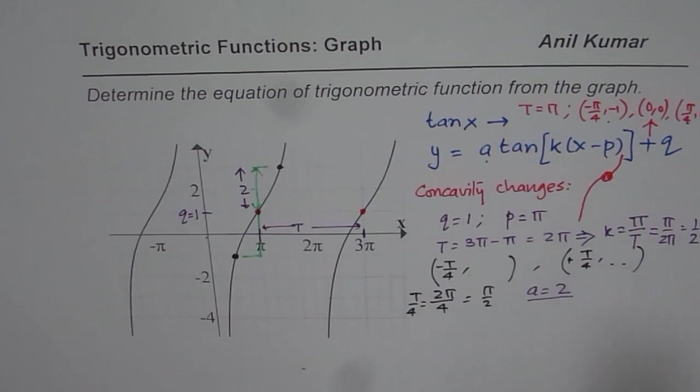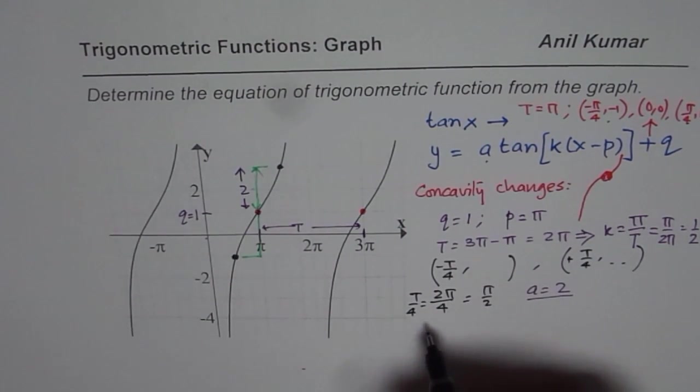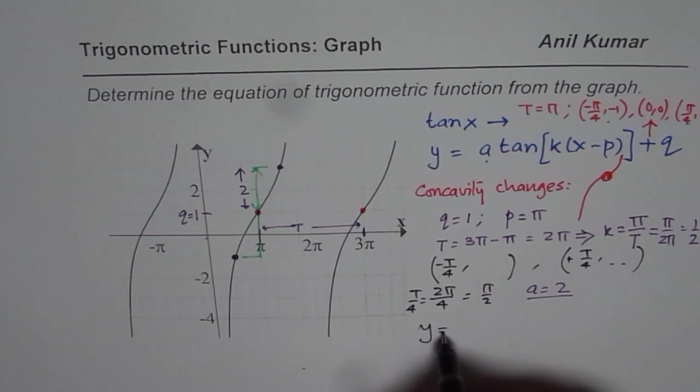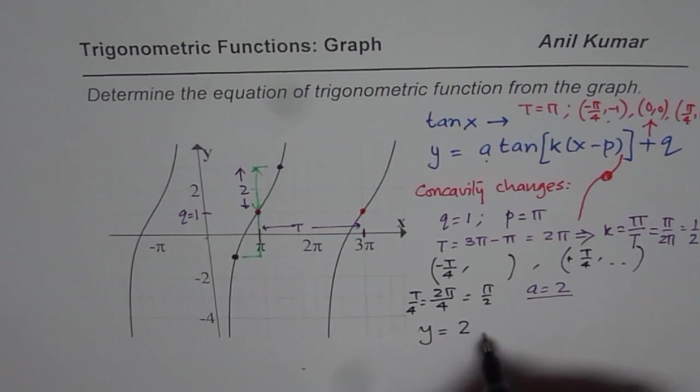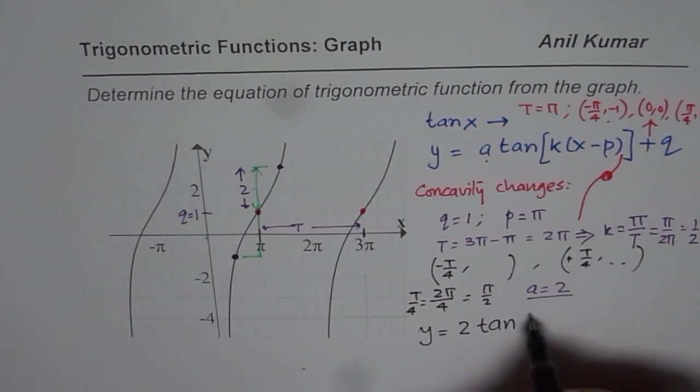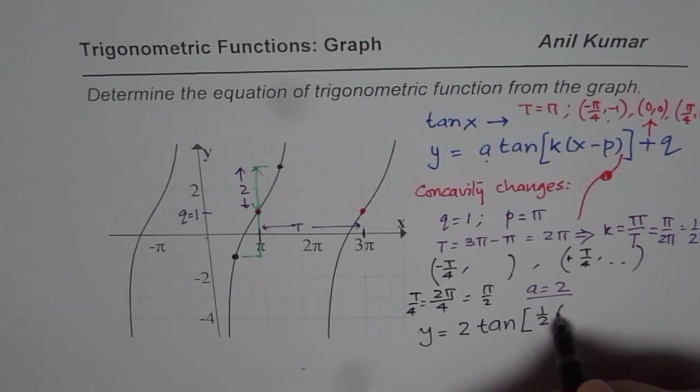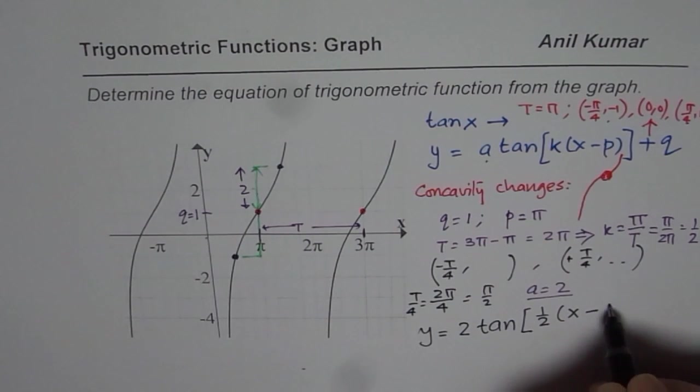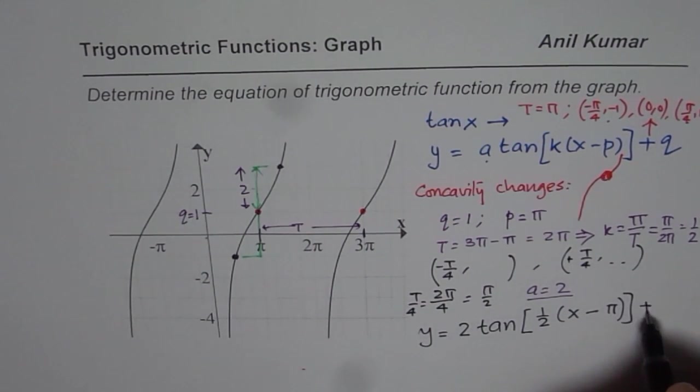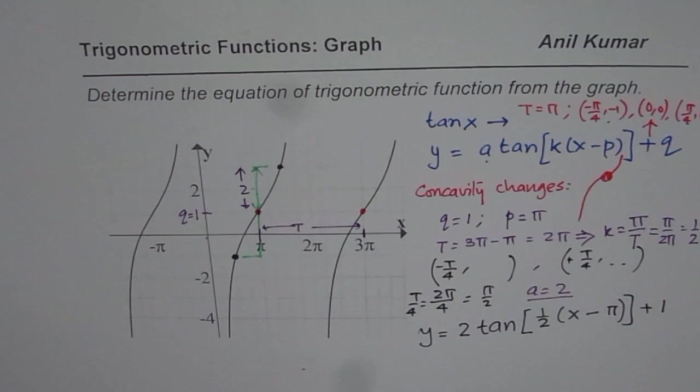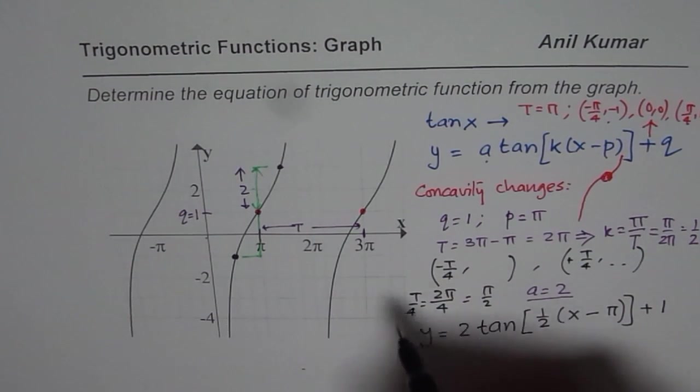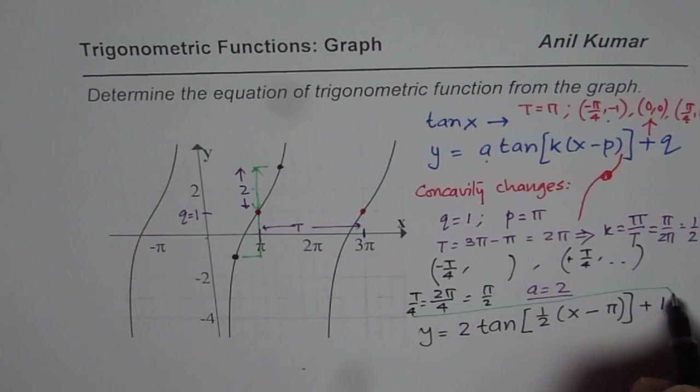So once we get the value of a also, we can write down our tan function. With all this information, write down this function as y equals to a is 2 for me, tan. And k value is half x minus π and it moved 1 unit up plus 1. So that is how you can get the equation of tangent graph.